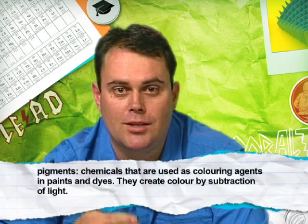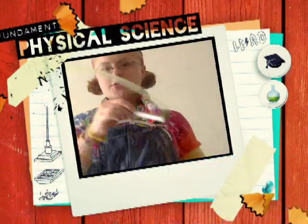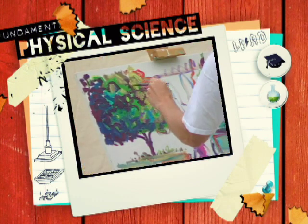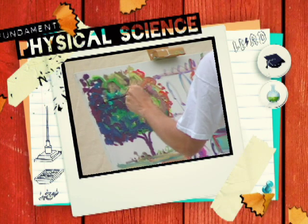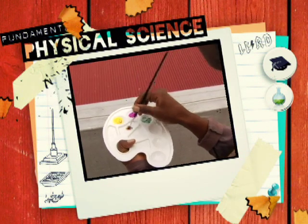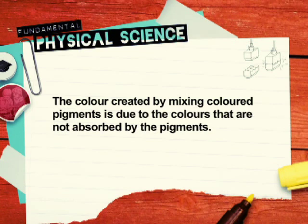Pigments are chemicals used as colouring agents in paints and dyes. They give colour to materials by selectively absorbing light of some frequencies and reflecting light of other frequencies — the colour of the pigment depends on the reflected light. When you mix paints of different colours, the individual pigments continue to absorb light in the same way as before, and the colour of the new mixed paint depends on the combination of reflected frequencies. What is important to realise is that the colour created by mixing pigments is due to the colours that are not absorbed.